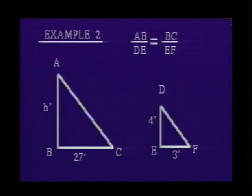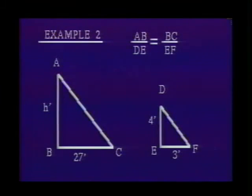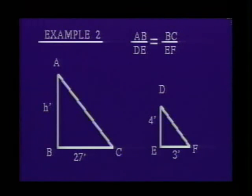Begin by drawing two triangles. Triangle ABC will represent the tree and its shadow. Triangle DEF will represent the post and its shadow. Label the length of each known side and call the height of the tree H. Since these triangles are similar, we will use the fact that the sides of similar triangles are proportional to determine the lengths of the unknown sides.